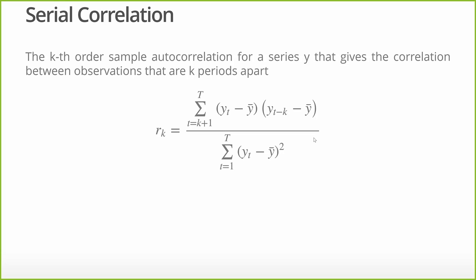I know I said I'd keep math to a minimum — this isn't that — but let's break it down quickly. All this is saying is: when we have a series Y_T, if I want to know what the kth order autocorrelation is — 'auto' meaning with itself, so correlation with itself — I'm going to look at the current observation compared to the k periods before. So R1 is how correlated is the current observation with the previous observation. R2 is how correlated is the current observation with two periods ago.